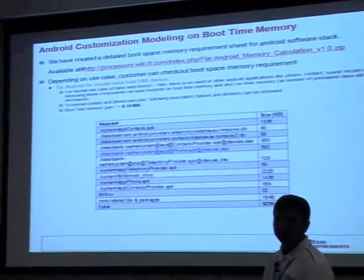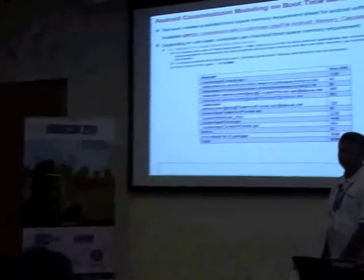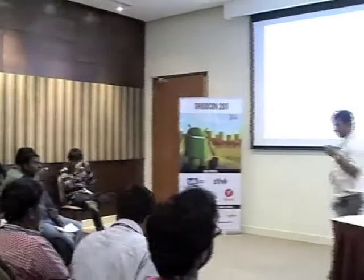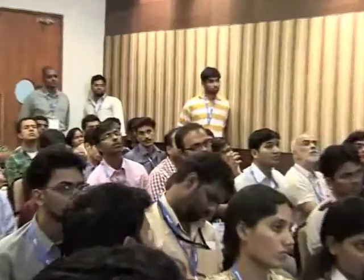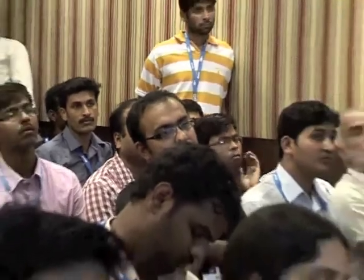So you are mostly removing applications but also framework components — what are the framework components that control contacts? I'm removing contact engine, contact provider. For runtime customization, it is a bit simpler. Just go to the build/target/product/generic.mk file — this is a list of all packages that will be part of the Android build. You just delete any package you do not want as part of your product. It will not build, it will save boot memory, and it will not be launched at runtime.